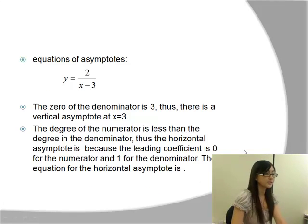Now let's try to figure out the equation of the asymptotes. The zero of the denominator is 3, therefore there's a vertical asymptote at x equals 3, and we already determined that when we tried to determine the domain. The degree of the numerator is less than the degree of the denominator. Thus, the horizontal asymptote exists, because the leading coefficient is zero for the numerator, and the denominator is 1. Therefore, the horizontal asymptote is zero.